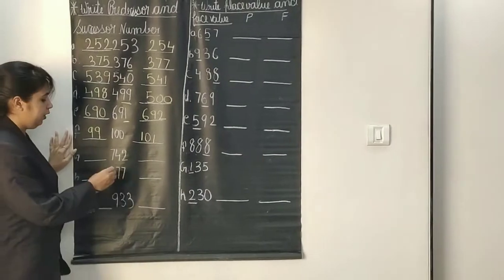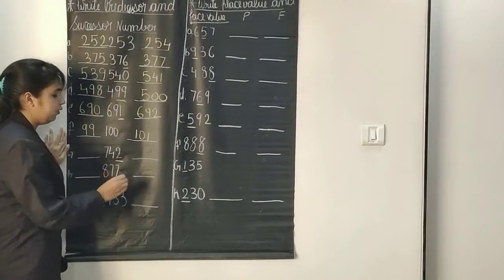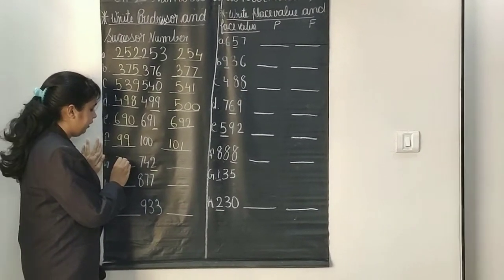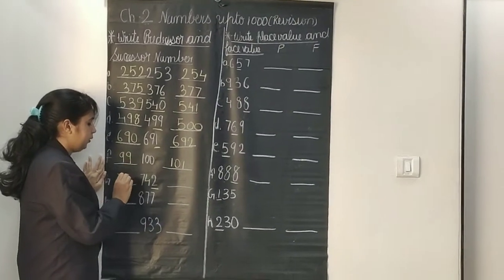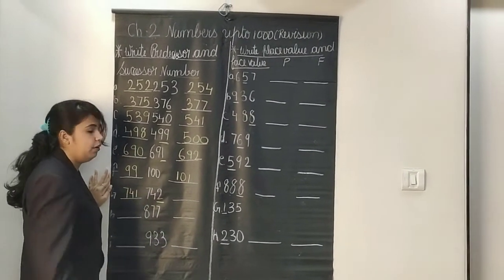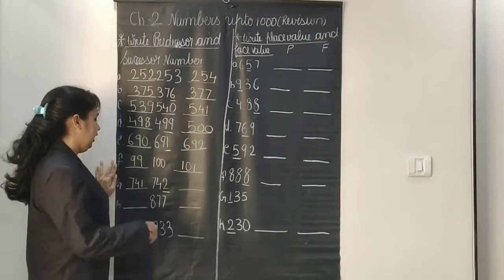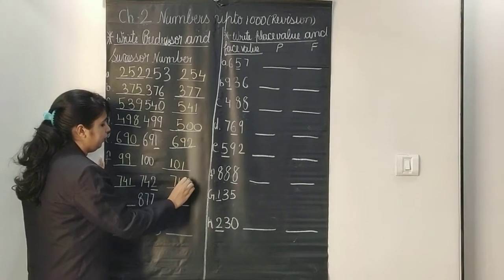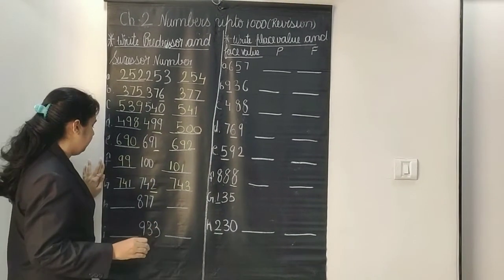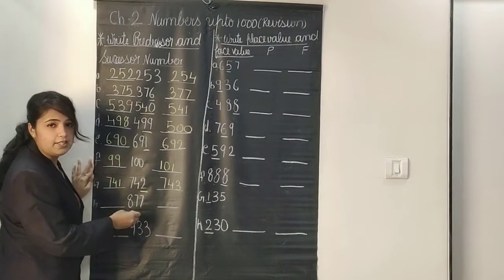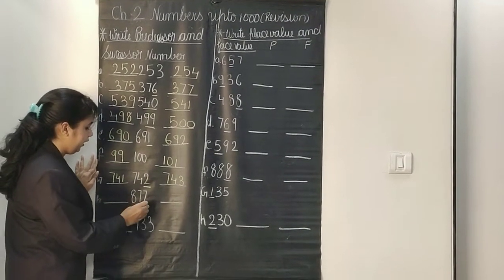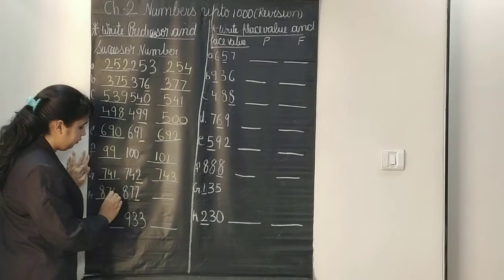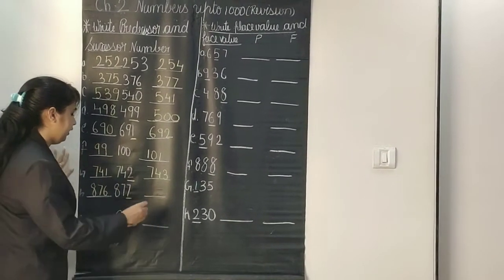Next is 742. I will see the number at the ones place — the predecessor of 742 is 741, keeping the hundreds place the same, and the successor of 742 is 743. Our next number is 877 — what comes before 7 is 6, so the predecessor of 877 is 876.